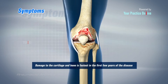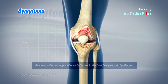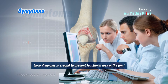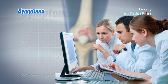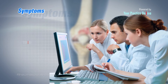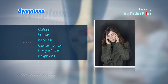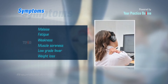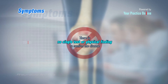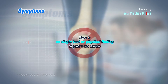Damage to the cartilage and bone is fastest in the first few years of the disease. Therefore, early diagnosis is crucial to prevent functional loss in the joint. Early signs and symptoms of the disease are very general and nonspecific, such as malaise, fatigue, weakness, muscle soreness, low-grade fever, and weight loss. Moreover, there is no single test or physical finding to confirm the disease, making early diagnosis of RA very challenging.